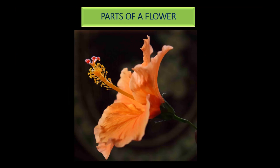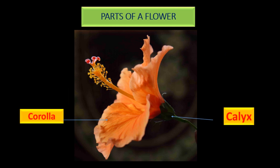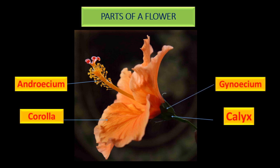Let us look at the parts of a flower. There are mainly four major parts of the flower. The first one is calyx. The second colorful part is called corolla. The top part is called androecium, and the innermost part is called gynoecium.